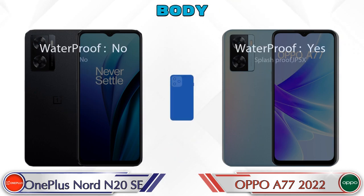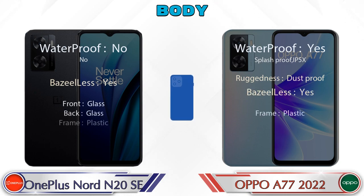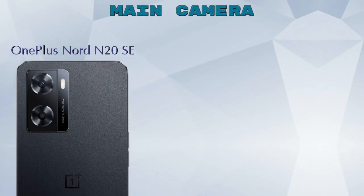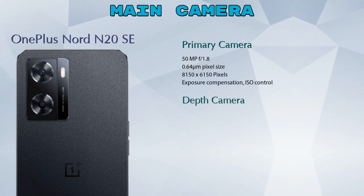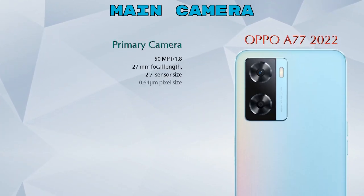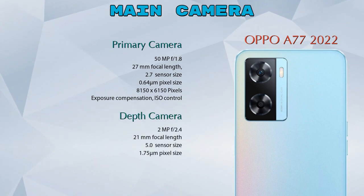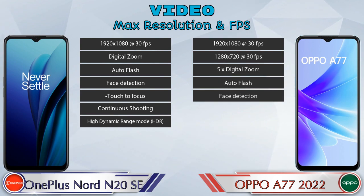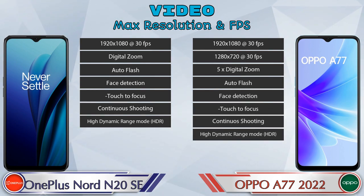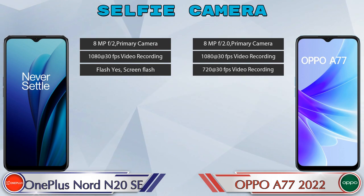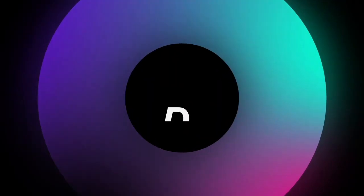Now let's see the details about the camera. For the rear camera, the Nord N20 SE has two cameras — a primary camera and a depth camera. The A77 2022 also has two cameras — a primary camera and a depth camera. For video, the Nord N20 SE has 7 features and the A77 2022 has 8. For the front selfie camera, both phones have a single camera with three different features available.